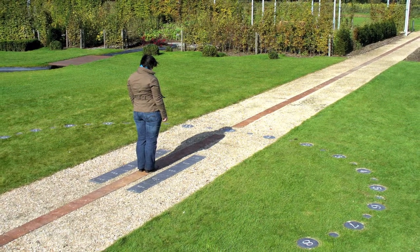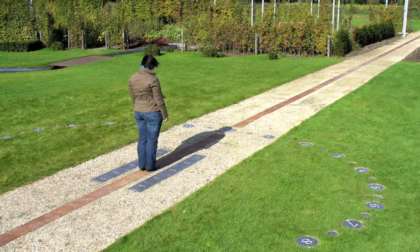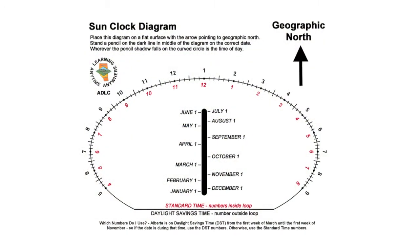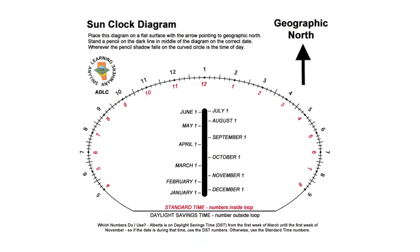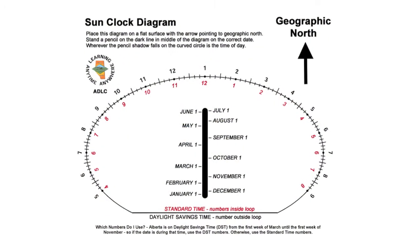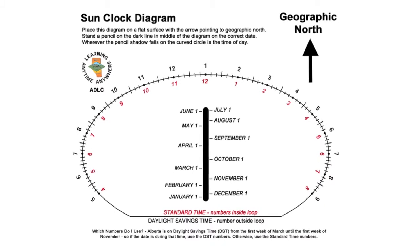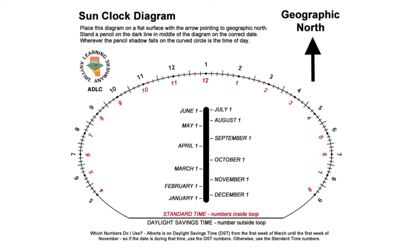You may make your own sun clock with very simple materials. All you need is a sunny day, a sun clock diagram, and a pencil.